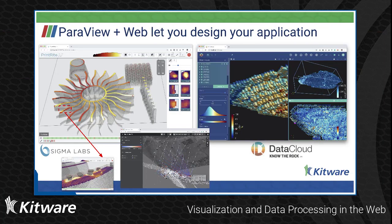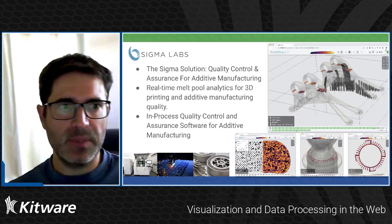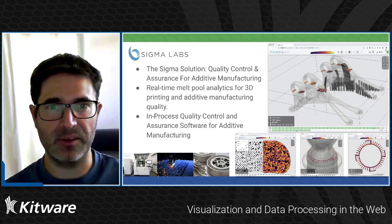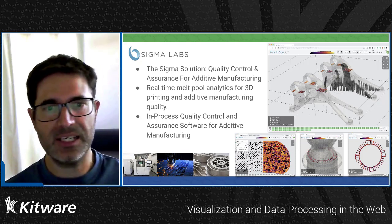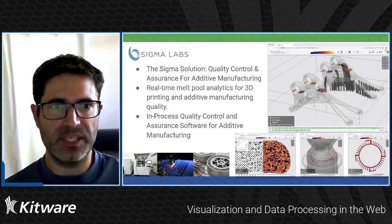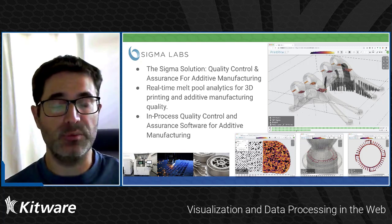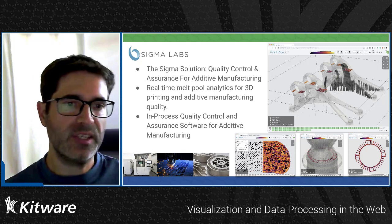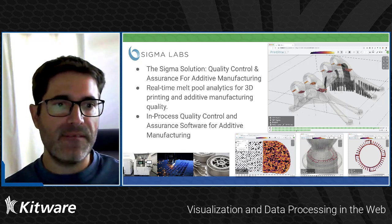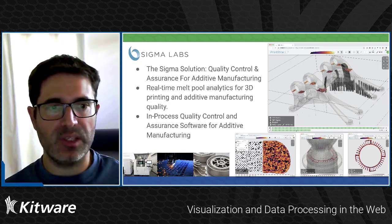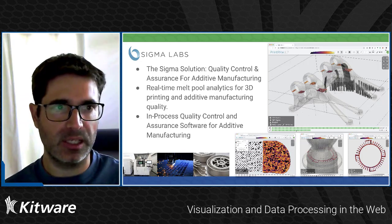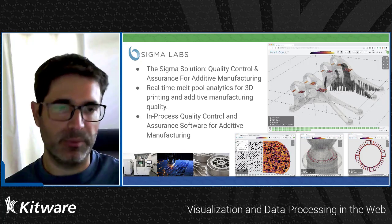The important part is that ParaView web lets you design your application the way you want. Let's take two examples from the commercial world. First, Sigma Labs, a partner of ours specialized in quality control on 3D printing — not the plastic melting type, but laser melting titanium to build 3D metallic pieces used in planes or other applications. Sigma Labs leverages ParaView for visualization and data processing to find regions of interest that may present anomalies or defects, as shown in the illustrations on the right.